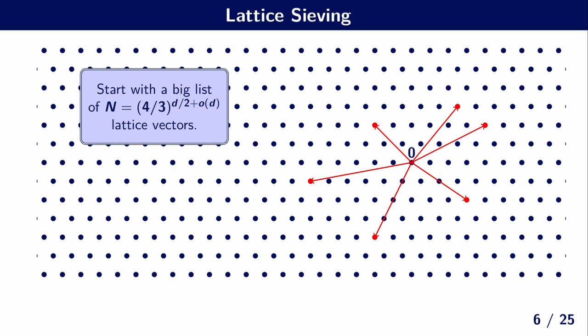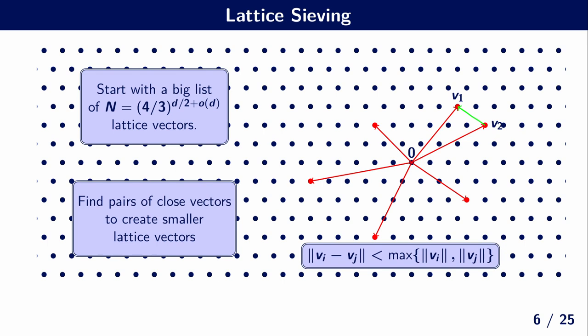And we want to solve this problem using lattice sieving. So what's lattice sieving? Well, the idea is to start with a big list of exponentially many lattice vectors. Then inside of this list, we try to find pairs of vectors that are close to each other, such that their difference would give a short lattice vector. And what we then do is we replace a long vector in our list with this new shorter vector. And we repeat this until we have only a bunch of short vectors left.